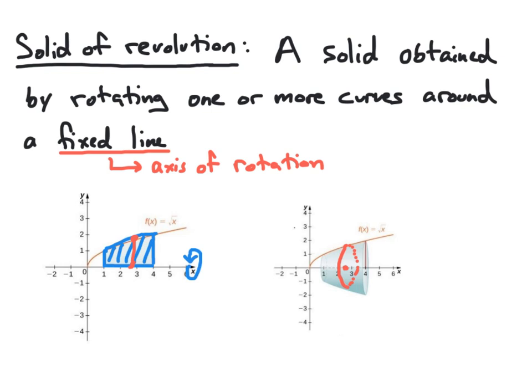By spinning that one segment around, we form our disk — this will be our cross-section in our solid. So the radius here is easily determined: the radius of this disk is simply going to be the square root of whatever the x value on the x-axis happens to be. And once we know this, we can find the area of the disk and therefore compute the volume using the integral formula we previously discussed.